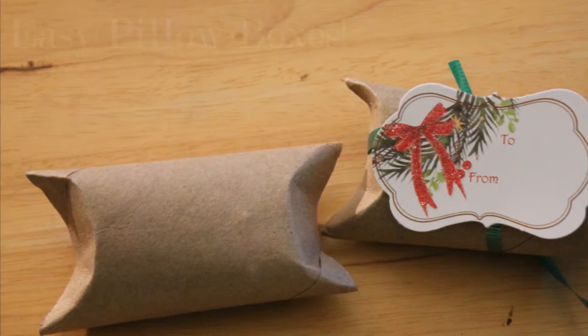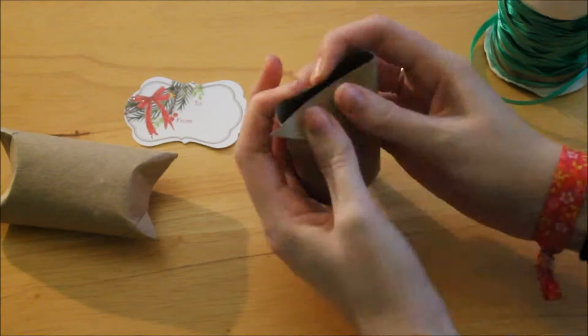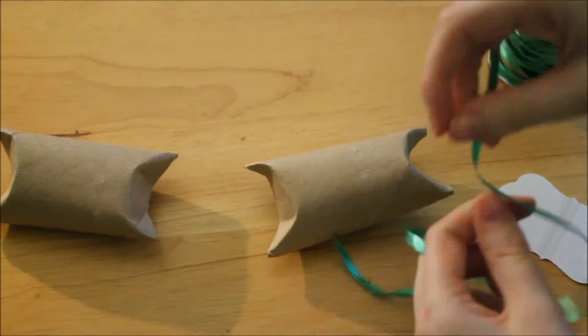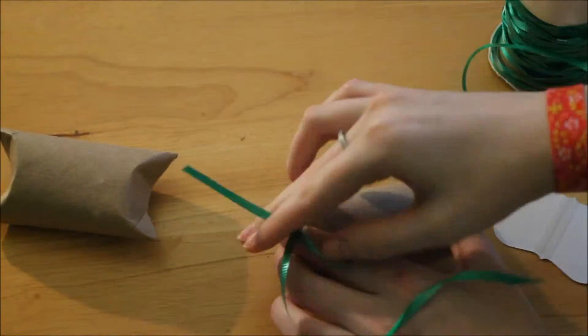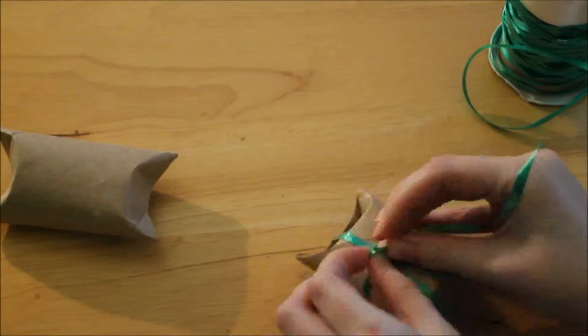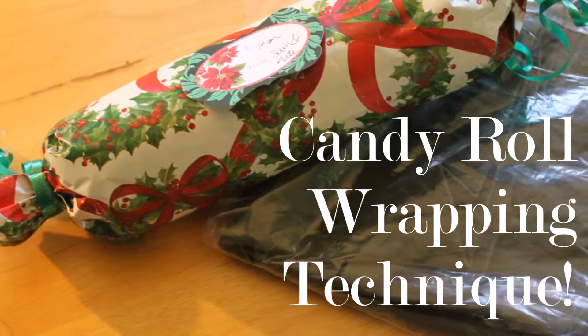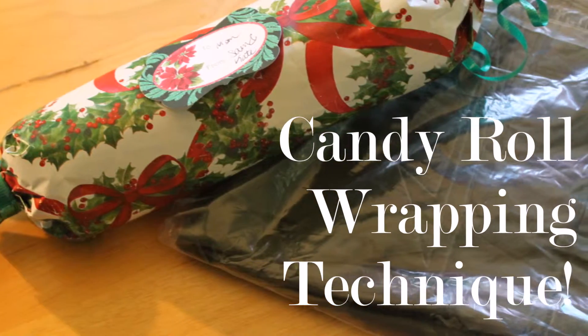Now we're going to move on to the pillow boxes made out of toilet paper or paper towel tubes. First, you just basically bend in the ends and you can either tape it shut or I'm just going to use some ribbon, which was actually really hard so you might want to have someone hold it down for you. Then you can just put a gift card or any little gift inside.